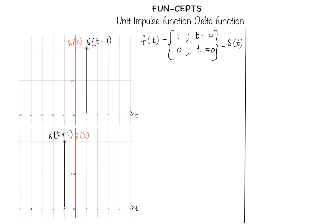The unit impulse function, or delta function, finds great utility in the study of signal processing and communication systems. The impulse function is defined to exist only at a specific time. For example, f(t) has a nonzero value — in this case it is 1 — at t equal to 0, as shown in this red representation. For all other values of time, it is equal to 0.